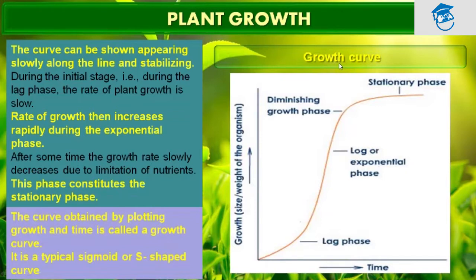If we plot time on the x-axis and growth — that is size or weight of an organism — on the y-axis, then we get a sigmoidal-like curve. The curve appears slowly along the line and then stabilizes. This initial part is the lag phase, followed by the log phase or exponential phase, and finally the stationary phase.